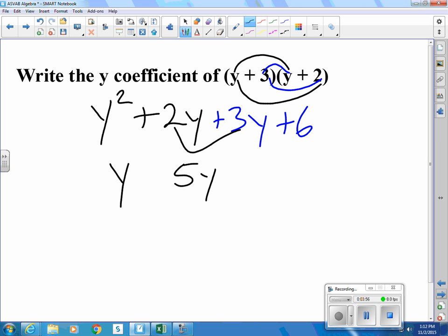So, we have y squared plus 5y plus 6. They want the coefficient of the y term. This one is the y squared term. This one is the constant. So we want the 5, which is the coefficient of the y term.